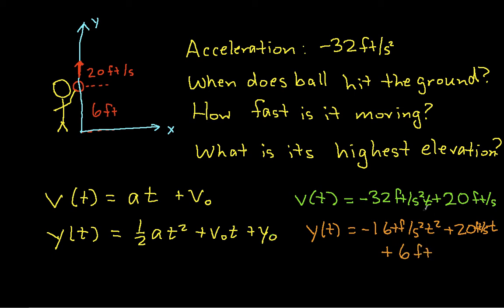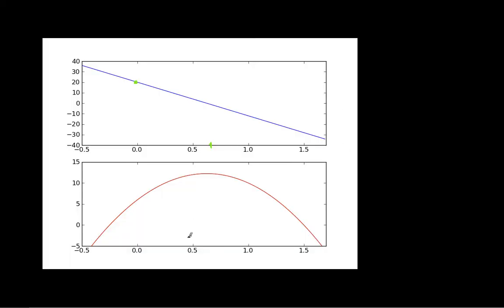And so if I graph this, I get the following. It's this parabola, and at zero, you can see that the initial height is 6 feet. It goes up, and then comes back down, and goes through the value of zero out here at some point.